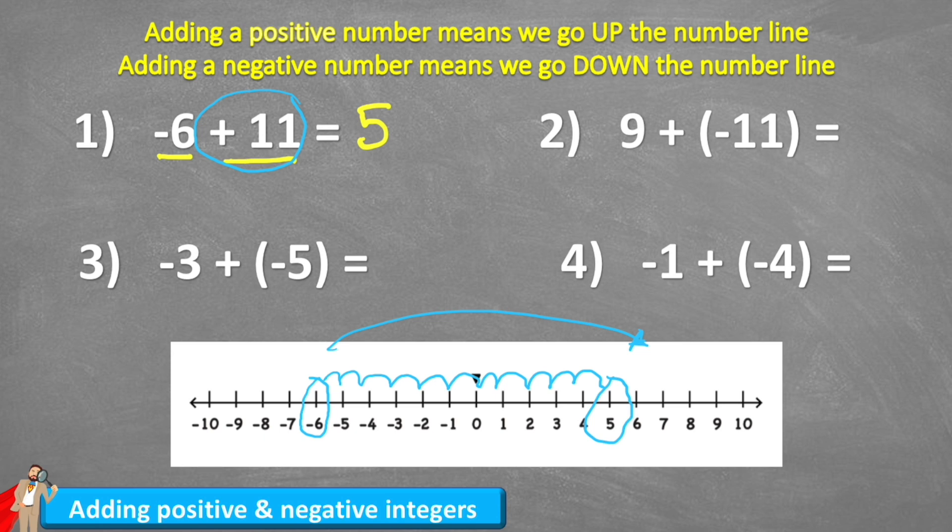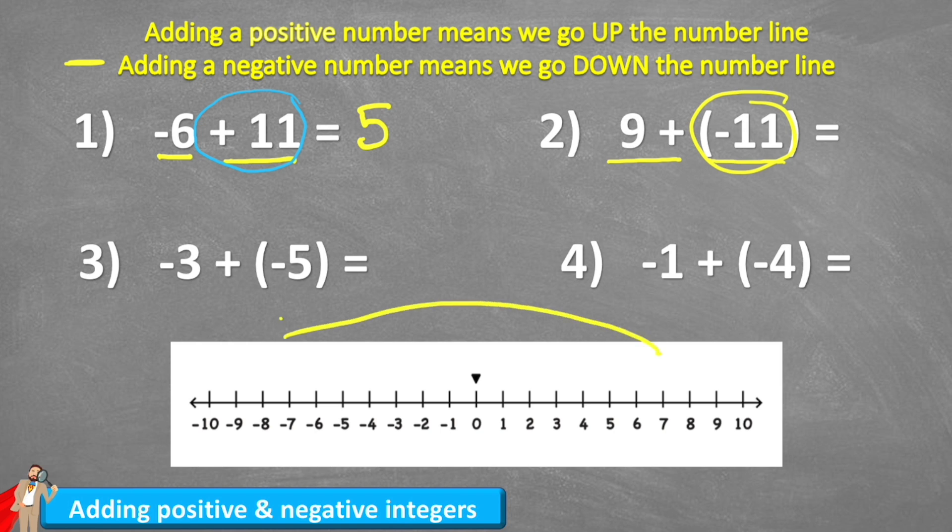Question one, not too challenging. Let's have a look at question two. This is a bit harder. We have nine plus a negative number this time. So remember rule two said if we add a negative number, we're going to end up coming down our number line.